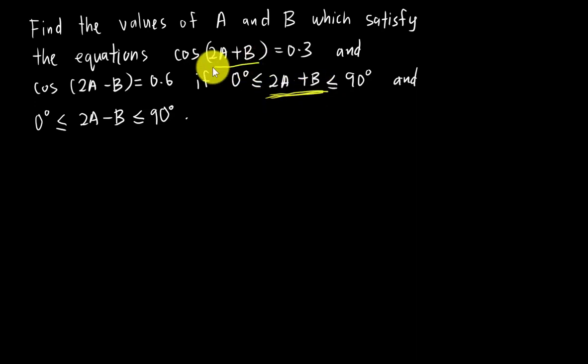For this kind of question, first thing I'll focus on is this angle here. I don't care what this angle is, I'll just assume this is X. If X is between 0° and 90°, when I solve this cosine equation I'll only get the angle in the first quadrant. Same idea, 2A-B I'm going to call it Y. Therefore Y is between 0° and 90°, so cos(Y) is in the first quadrant as well.